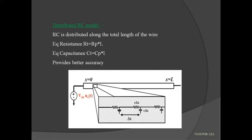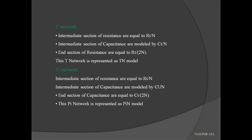The distributed RC model is very accurate — it provides better accuracy. However, we cannot realize this physically; ideally, we cannot realize this distributed RC model. The next variants are the T-network and the PI-network. For example, the equivalent resistance seen in the T-network is RT/N and the equivalent capacitance is CT/N.